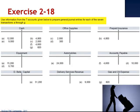Exercise 18 gives us information from T-accounts and asks us to recreate the transactions — to decide what must have happened based on our understanding of how the T-accounts work.